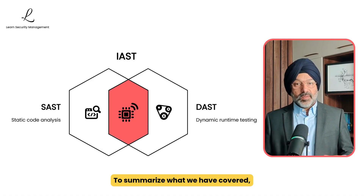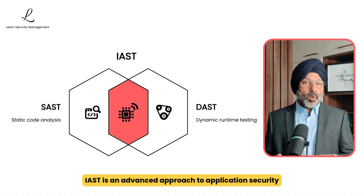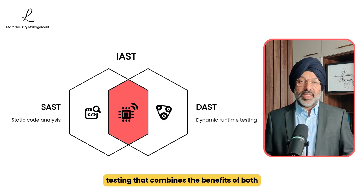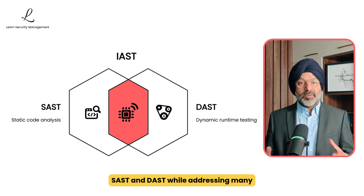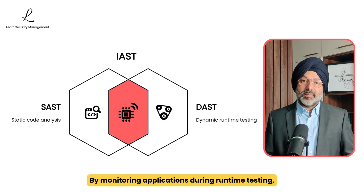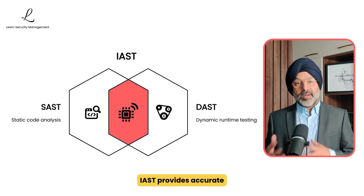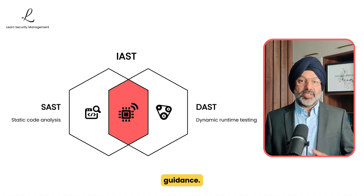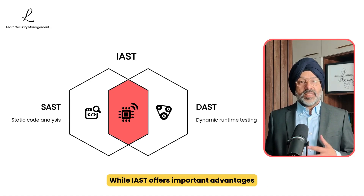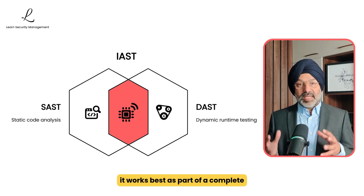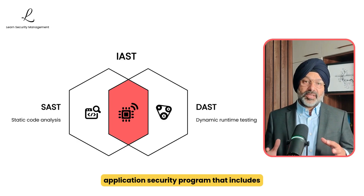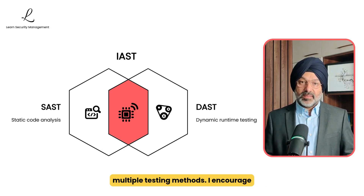To summarize what we have covered: IAST is an advanced approach to application security testing that combines the benefits of both SAST and DAST while addressing many of their limitations. By monitoring applications during runtime testing, IAST provides accurate vulnerability detection with clear remediation guidance. While IAST offers important advantages in accuracy and efficiency, it works best as part of a complete application security program that includes multiple testing methods.